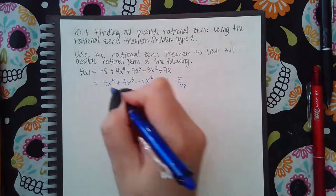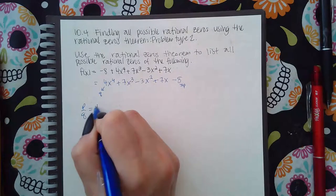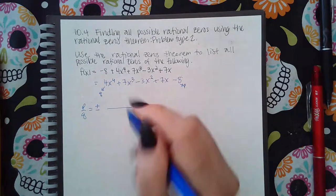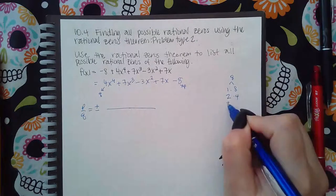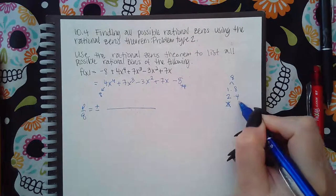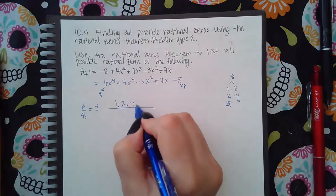This is where we get p from. This is where we get q from. So p over q becomes plus or minus and then the factors of p are going to be 1 times 8, 2 times 4. 3 won't go into 8 evenly and 4 is already on the list. So the numbers are 1, 2, 4, and 8.